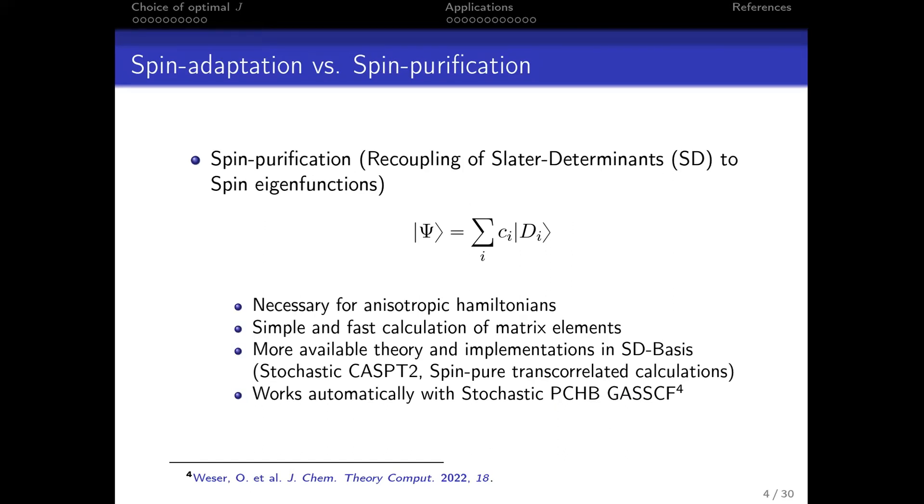If you go to spin purification, you stay in the basis of Slater determinants, which is conceptually necessary if you want to have anisotropic Hamiltonians, and you have simple and fast evaluation of matrix elements.